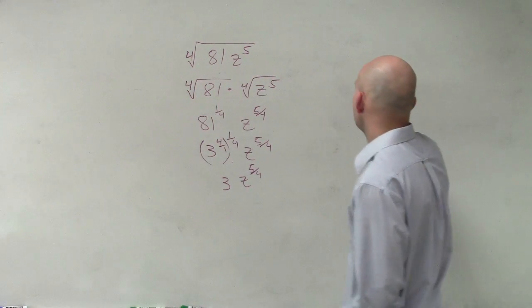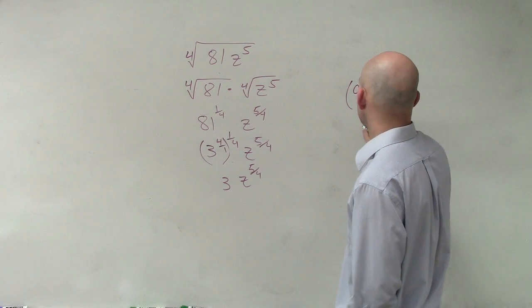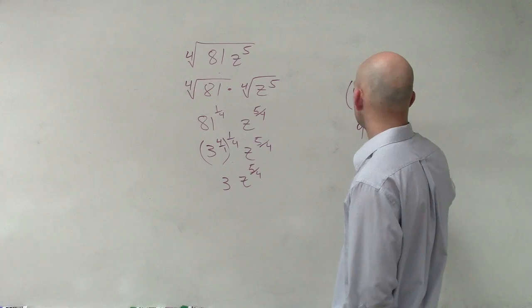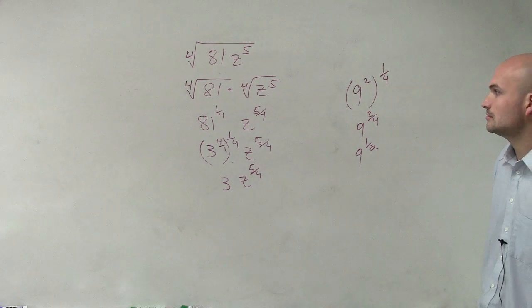If you would have done 9, that's fine. 9 squared to the 1 fourth power. That equals 9 to the 2 over 4, which equals 9 to the 1 half. Now,